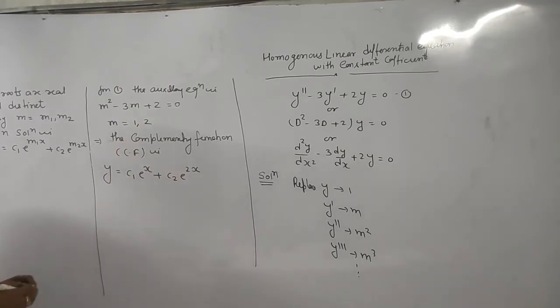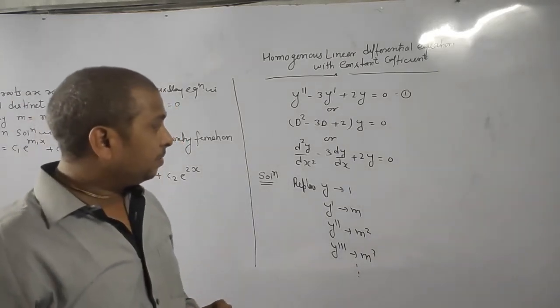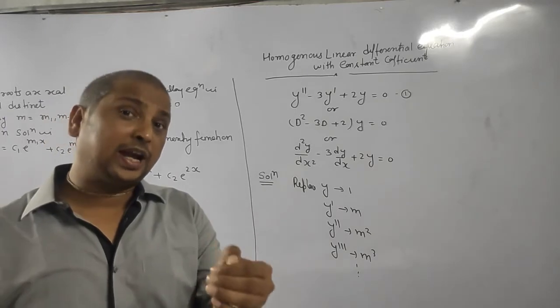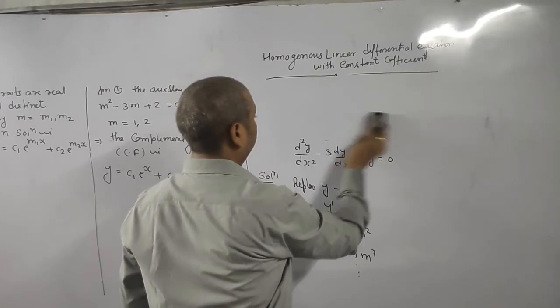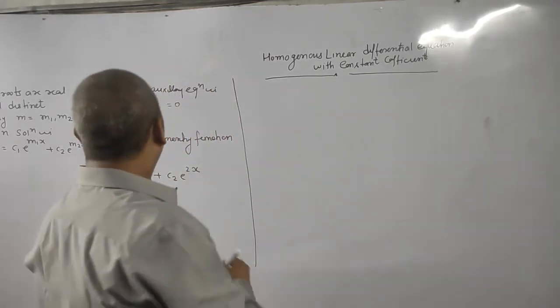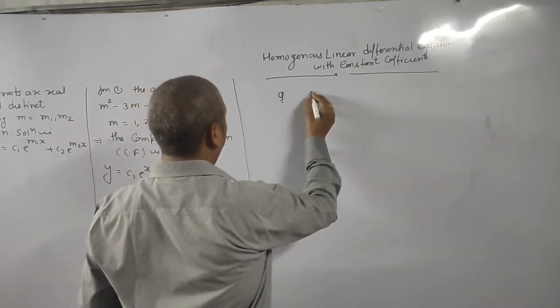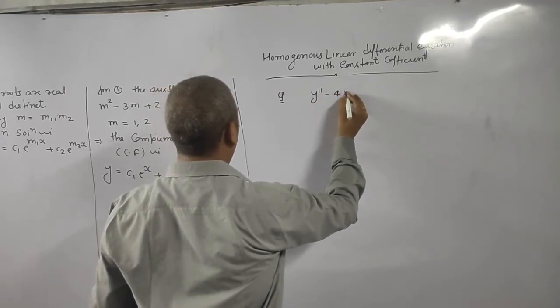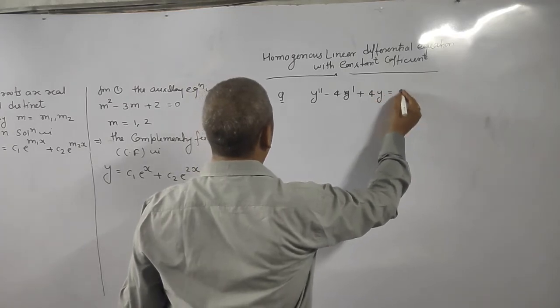Now second case. What is second case? Second case means when roots are real and equal. Now, for example, we change the function: y double dash minus 4y dash plus 4y is equal to 0.